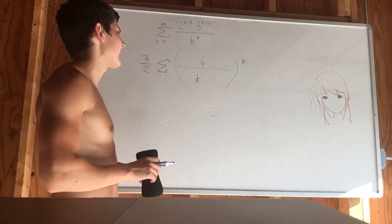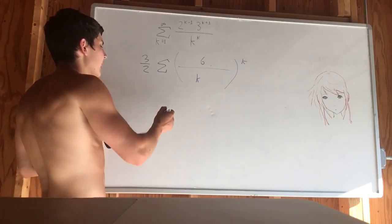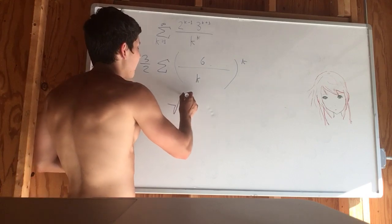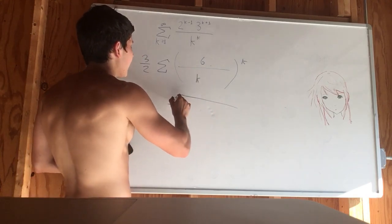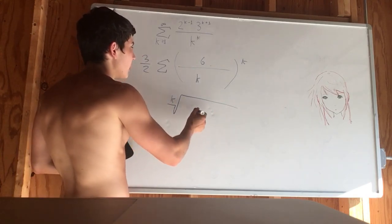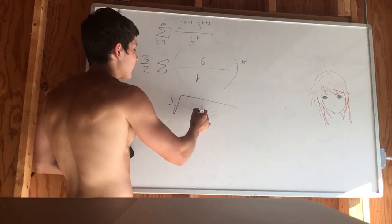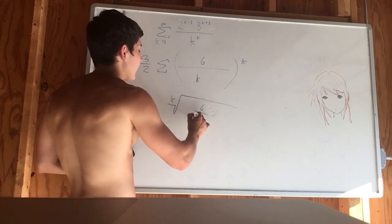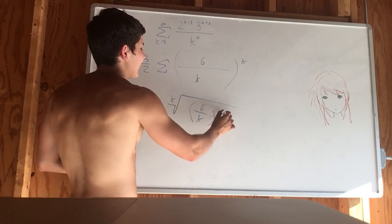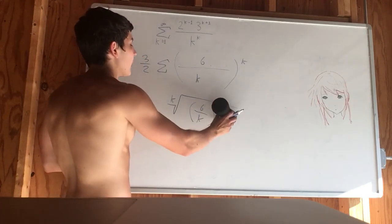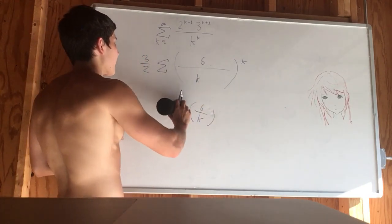So what that's telling us is we can take the root test. That's probably the best thing we could do because we have a variable exponent. So we take it to the kth root and we have 6 over k to the k. So that exponent goes away with this kth root.